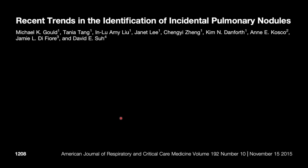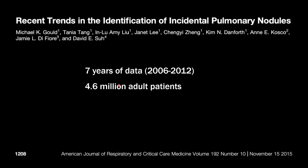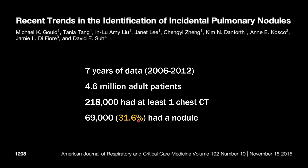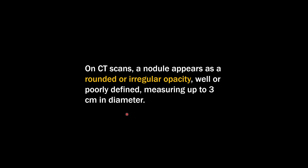We're also doing a lot more CT scans than we used to in the 90s and early 2000s. An article published in 2015 entitled 'Recent Trends in the Identification of Incidental Pulmonary Nodules' looked at seven years of data from 2006 to 2012, covering 4.6 million adult patients in Southern California. Of about 218,000 who had at least one chest CT, almost a third had a lung nodule — defined as four millimeters or greater. If defined as one millimeter or greater, that number would likely be closer to 75 or 80%. The point is that lung nodules, especially with modern CT scanners, are very, very common.